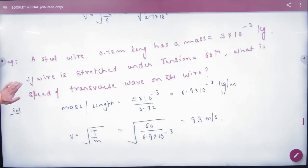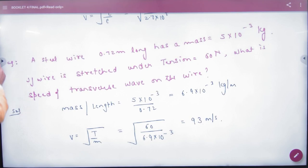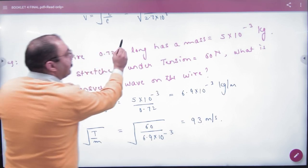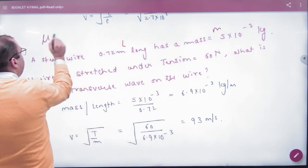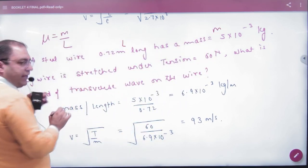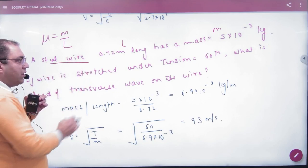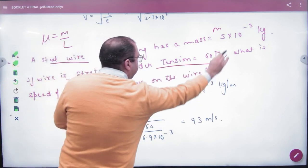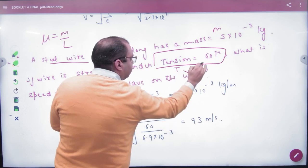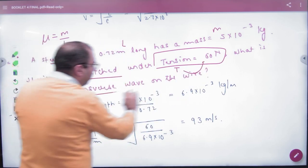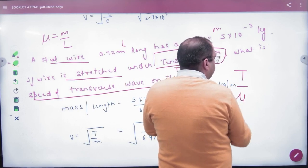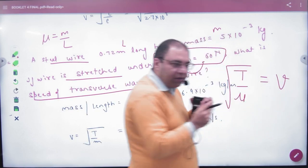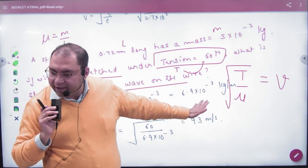Jaise steel wire hai, steel wire ki length given hai, mass given hai. To mu to nikaal loge, mass per unit length. Wire is stretched, wire ko stretch kar diya, tension ki value T bhi given hai. What is speed of transverse wave in the wire? Formula kya hai: under root of T by mu.